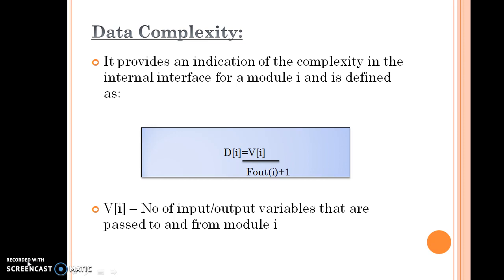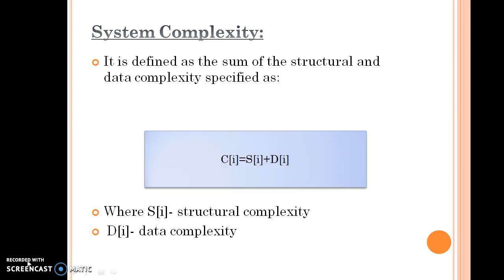System complexity is a combination of both structural complexity and data complexity. It is defined in such a way: C(i) equals S(i) plus D(i).